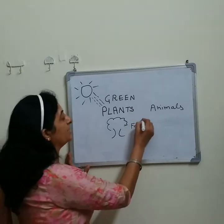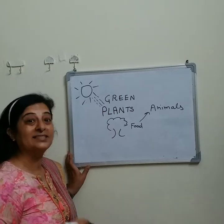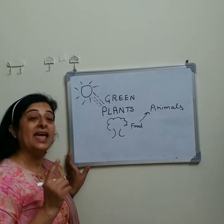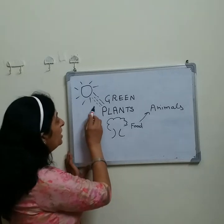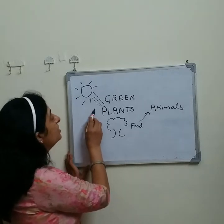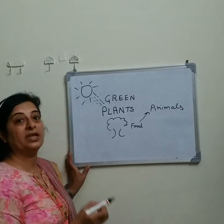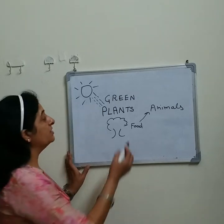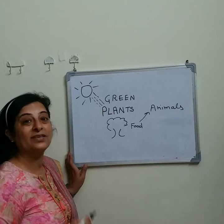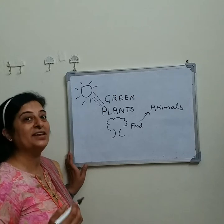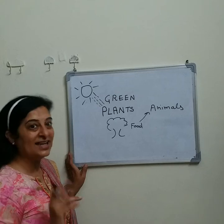This food is eaten by animals. So the solar energy is transferred to the green plants, and from the green plants this solar energy is transferred to animals and human beings. So we depend on the plants.